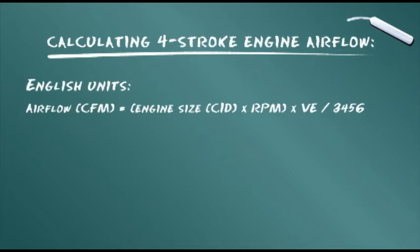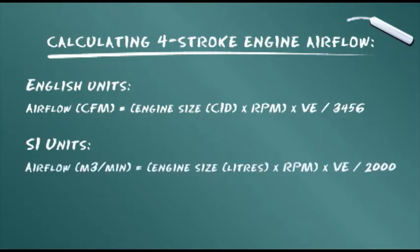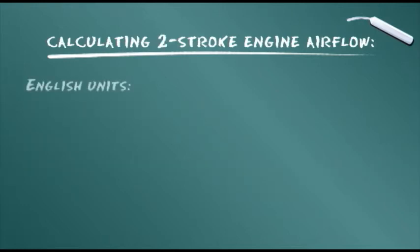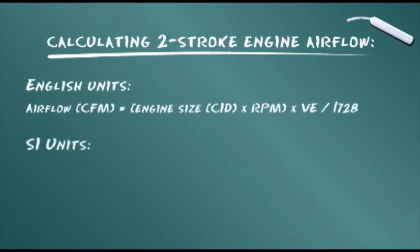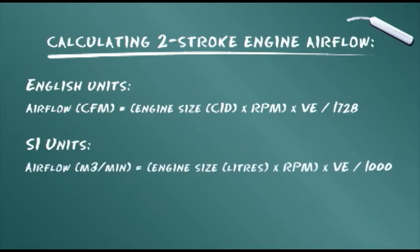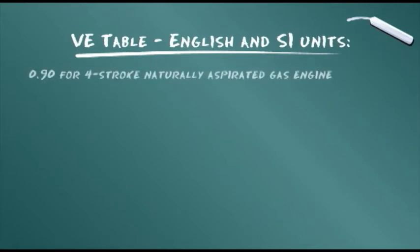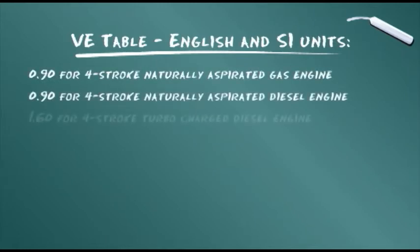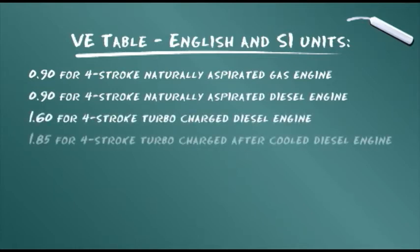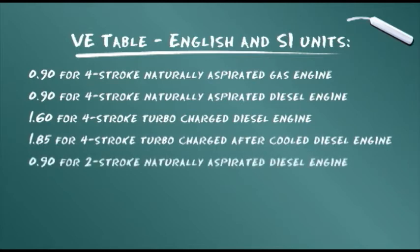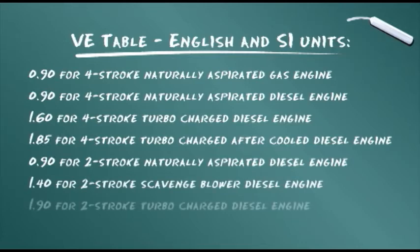This formula for four-stroke or four-cycle engine airflow calculation is expressed for both English and international SI units. We'll give you a table from which you can choose a value for VE, which is volumetric efficiency. The formula for two-stroke or two-cycle diesel engines in English or SI units also requires a value for volumetric efficiency. Choose the volumetric efficiency value from the table that matches your application. Note that electronic controls on modern engines can raise VE ratings to 2.0 or greater, which is one reason why manufacturer ratings are preferred when available.